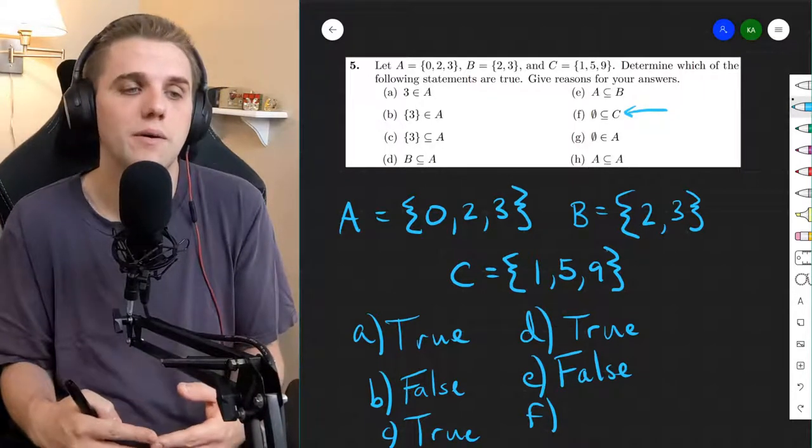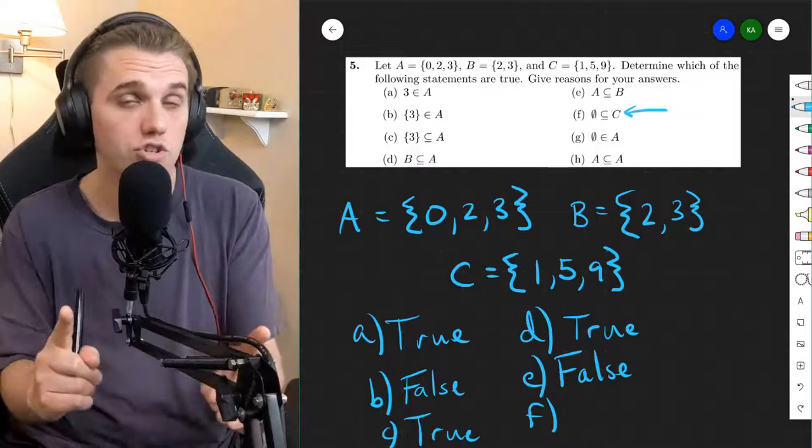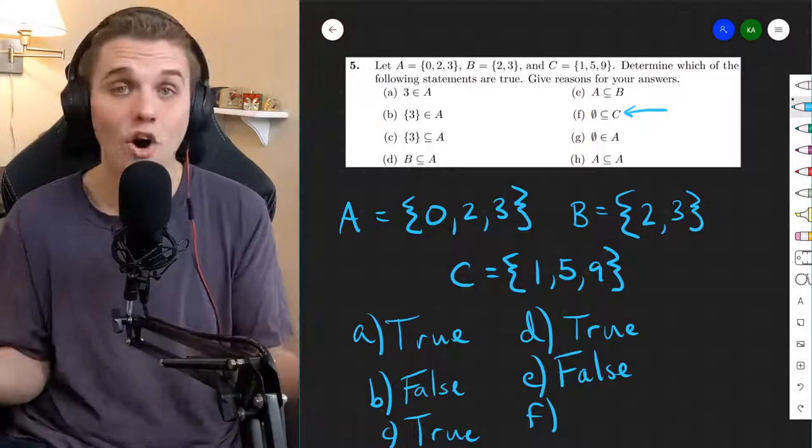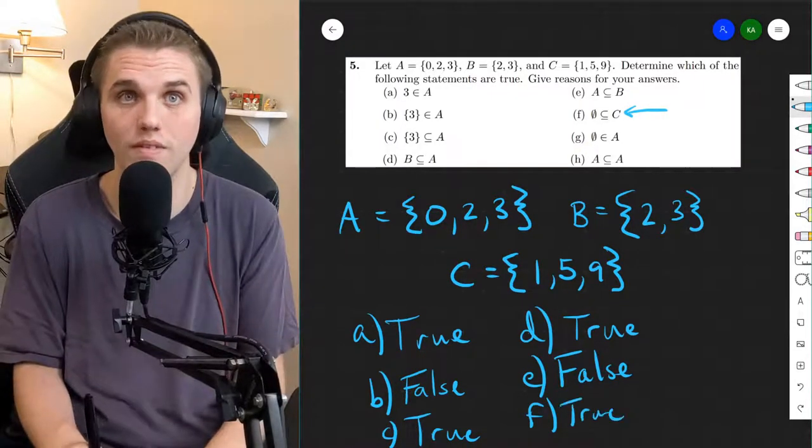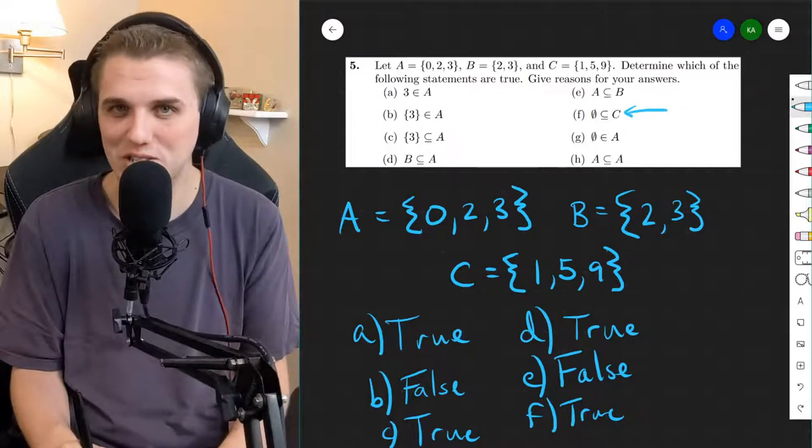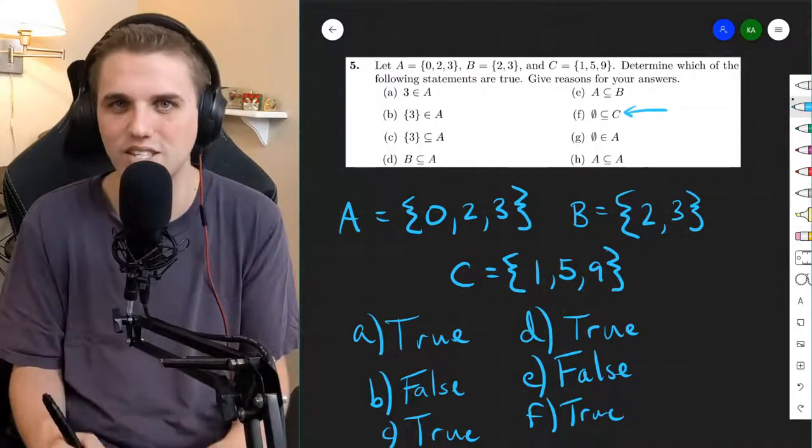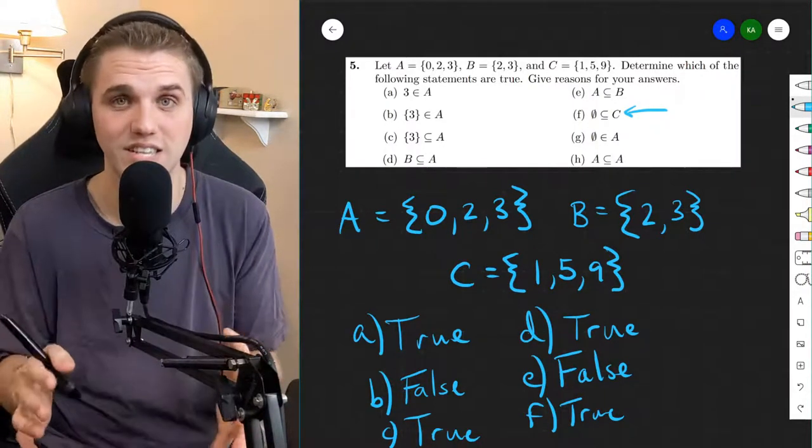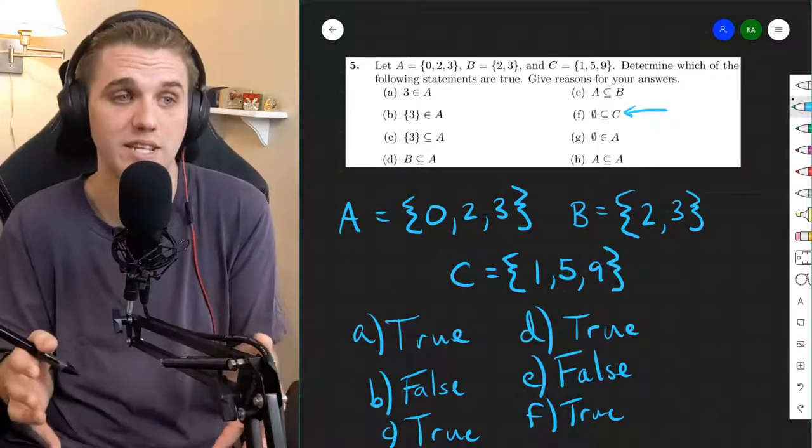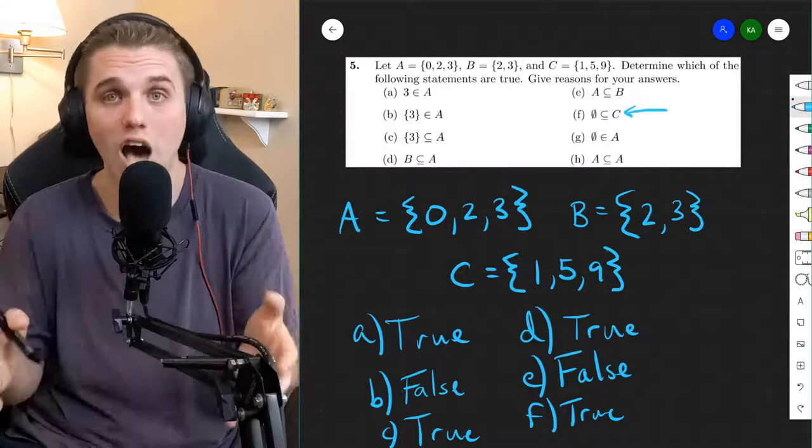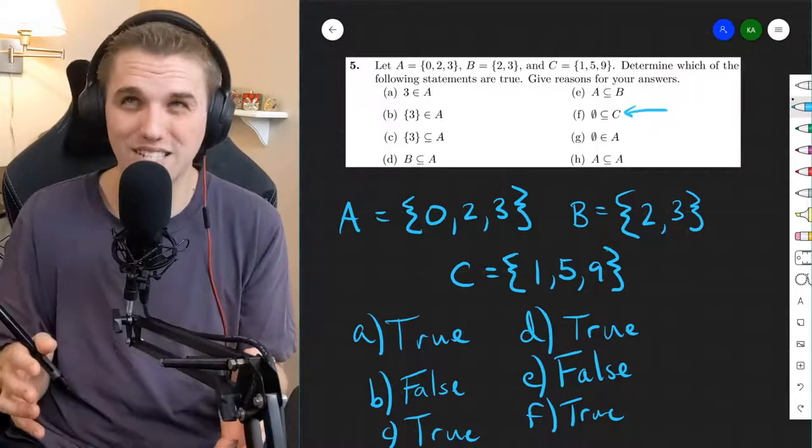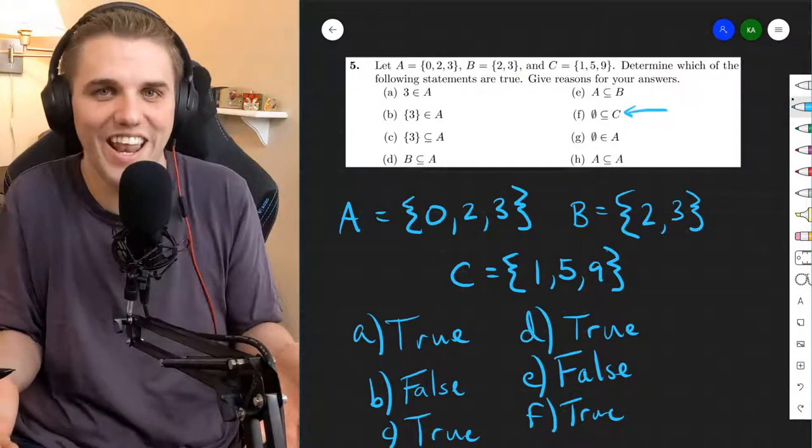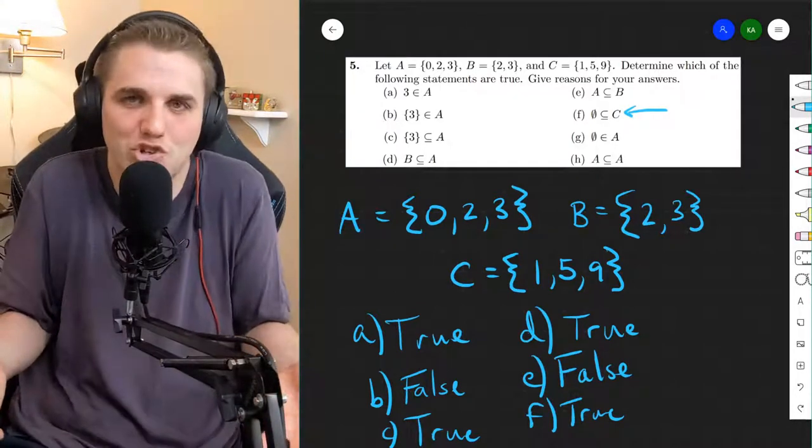Well, it just means that the premise of that implication is false. Not the conclusion, the premise. And if the premise of an implication is false, then the whole thing is true. This is true. It's true by default, though. It's not really true because of anything inspirational. It's just true by default. Everything in the empty set is in C. You can also say everything in the empty set is also not in C. In many ways, that's true because there's nothing in the empty set. So everything is pretty much true about the empty set.